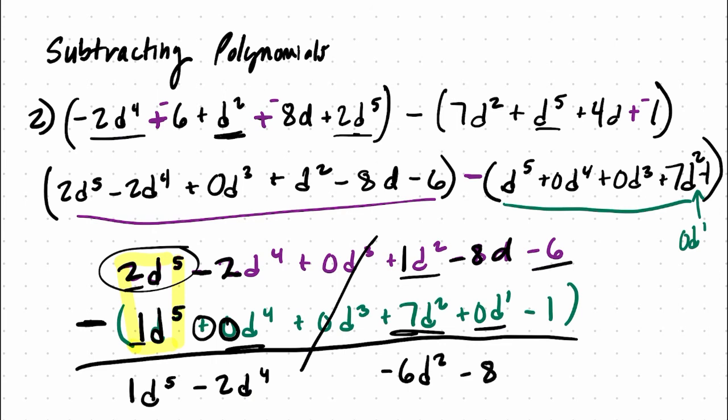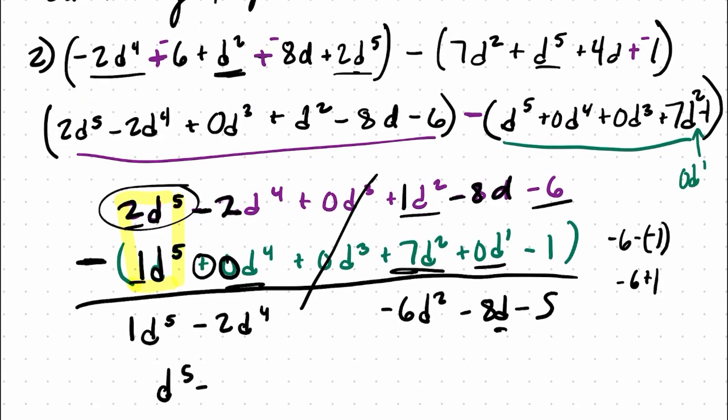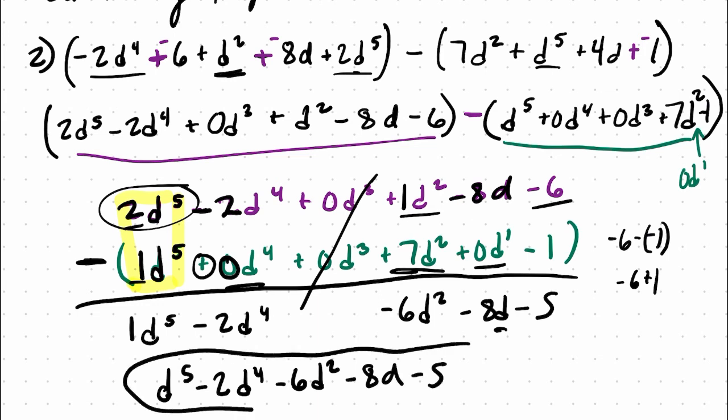And then negative six, we're subtracting negative one. Remember, that's negative six minus negative one, or just negative six plus one. And that's negative five. And I just missed that d right there. So what would this answer be? I'm going to rewrite it here. d to the fifth minus two d to the fourth minus six d squared minus eight d minus five. And that's it. I hope that helped.